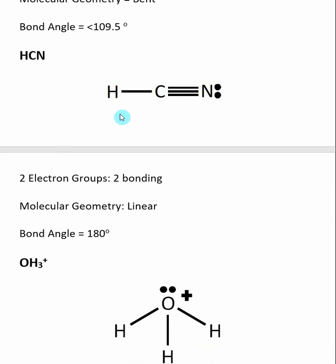For HCN, the central atom is carbon. We count electron groups, so there is one, two electron groups. Both of these electron groups are bonding, so the molecular geometry is linear. That means our HCN bond angle will be 180 degrees.